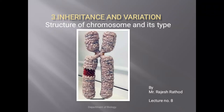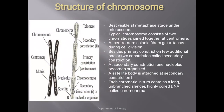Hello dear students, welcome back to lecture number eight of the third chapter, Inheritance and Variation. In the previous lecture we already discussed chromosomal theory, chromosome number, size, etc. Today we are going to discuss the structure of chromosome. Chromosomes are best visible at metaphase under the microscope. Typically, a chromosome consists of two sister chromatids joined together at a center known as centromere.